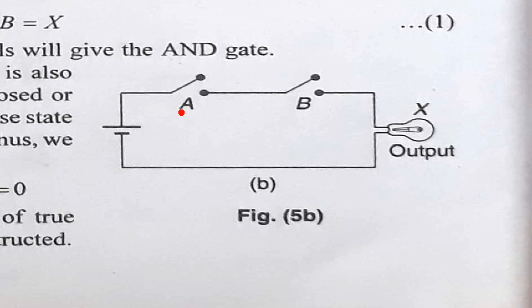If A is equal to 0 and B is equal to 1, A is kept open and B is closed. Current does not pass through the circuit, the bulb does not glow, so output is 0. If both A and B are opened, then A is equal to 0 and B is equal to 0. Then current does not pass, so X is equal to 0. You can explain all the cases of the truth table using two switches connected in series.